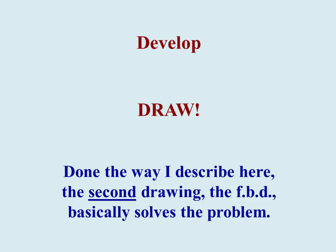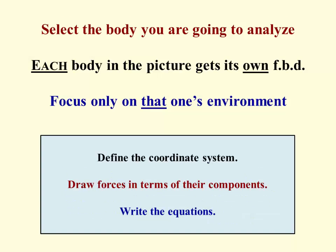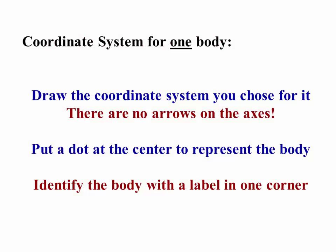Now we go into the develop territory. D for draw. We've already drawn one picture. Now we draw the one that matters, the free body diagram, which solves the problem for you if you do it the way I describe here. Select the body we're going to analyze. Each body gets its own free body diagram. Focus on that one body's environment. And then do these steps. Define a coordinate system. Draw the forces in terms of their components. And write the equations. And then you can solve them.